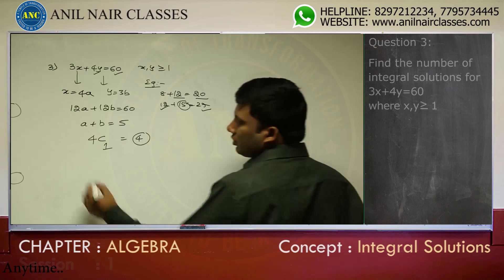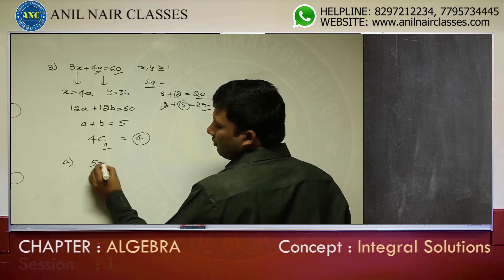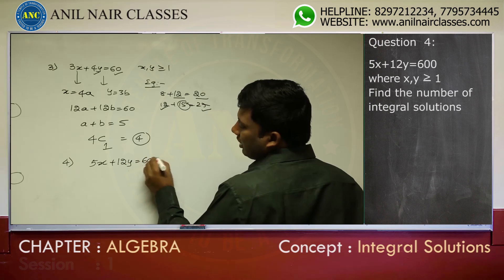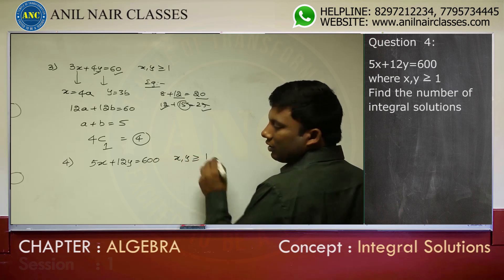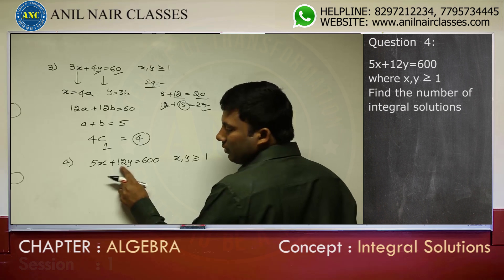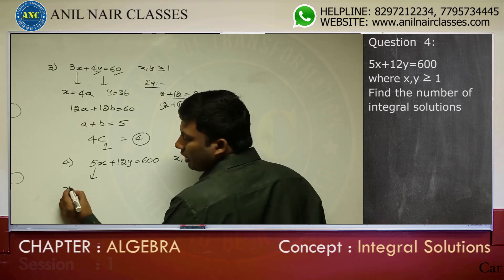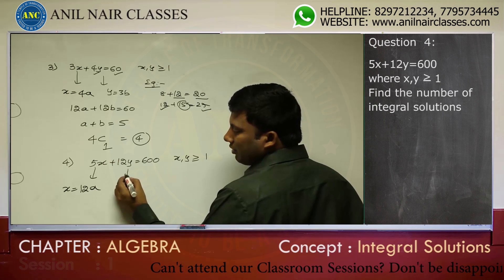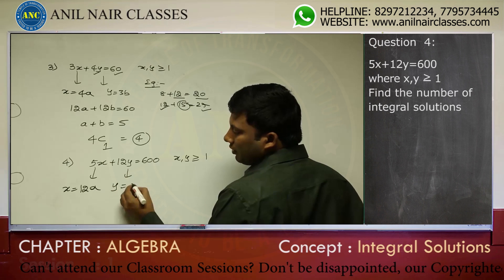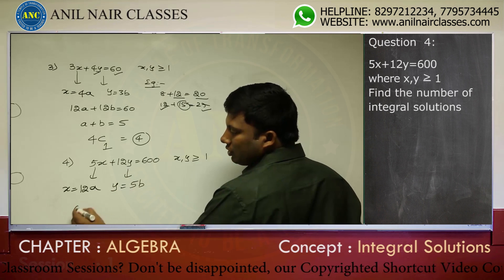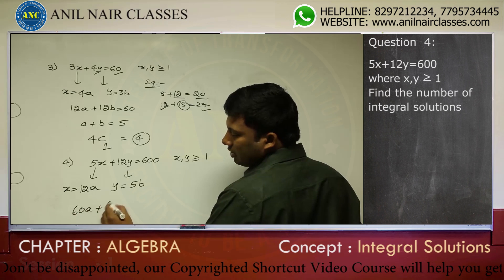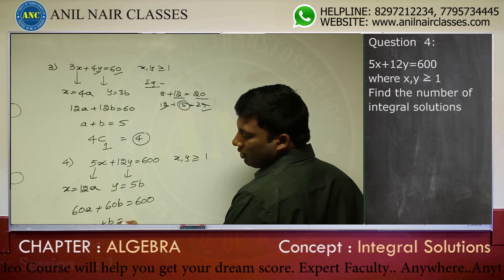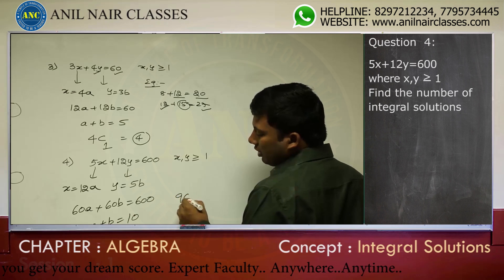One more question: 5x plus 2y equal to 600, x and y greater than or equal to 1. Since 2y and 600 are divisible by 2, y will be 5b. This gives 68 plus 60b equal to 600, reducing to a plus b equal to 10, giving 19 solutions.